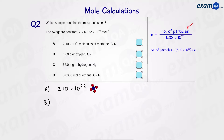In B, we've been given the mass of oxygen. So we can use mass over Mr to work out moles. The Mr of O2 is 32, so we do 1 over 32 to get moles. Then once we have moles, we times that by Avogadro's constant and we should get the number of molecules.